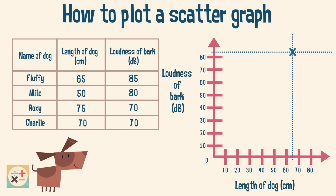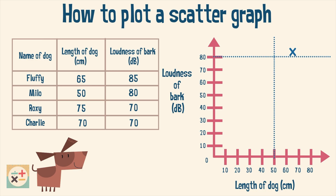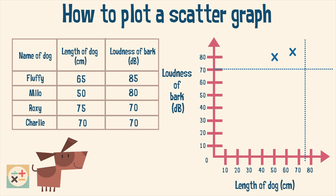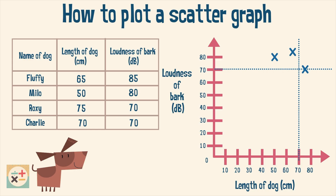Now do the same for the other dogs. The scatter graph is now complete. Although this doesn't tell us much, as we would need data from more than four dogs to determine how the length of the dog correlates to the loudness of its bark.